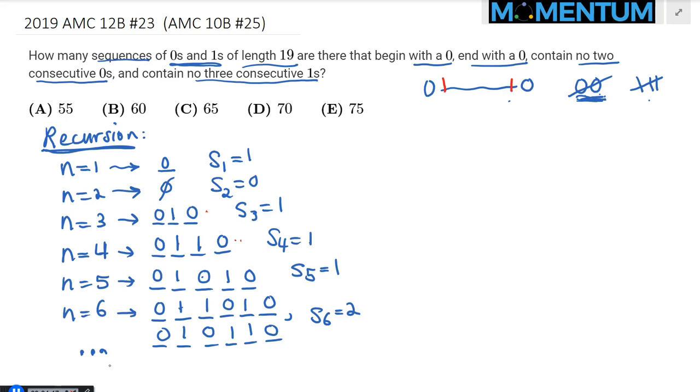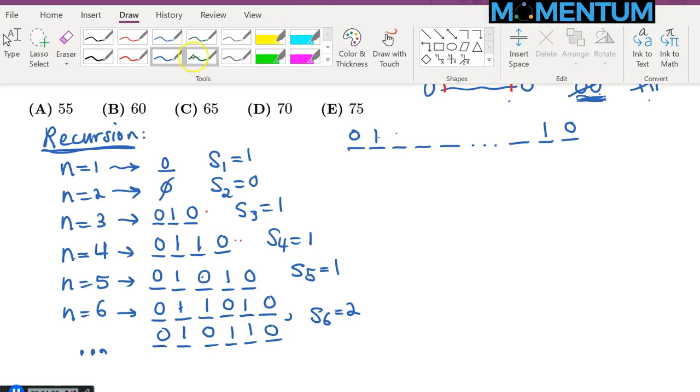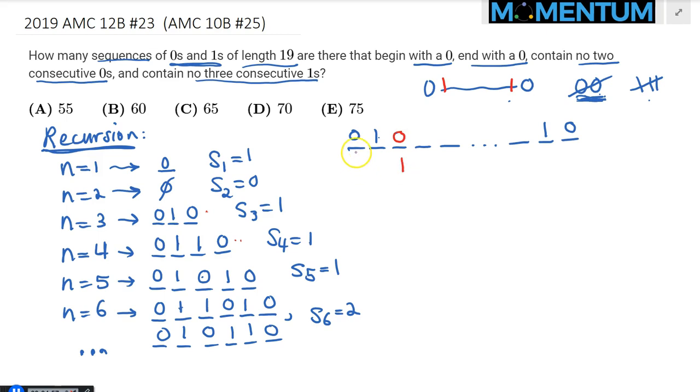Either the digit next to 1 is another 1, after which we have to have a 0 here, or an alternative way would be 0, 1, 0, 1, 1, 0. So S sub 6 is actually a 2. Now let's see if we can build up the general recursive form. In the general case, we have an n-digit number. We start with a 0, end with a 0, and the next digit has got to be a 1. After that, I have a choice—that's my case work. In that case, I will end up having two cases.